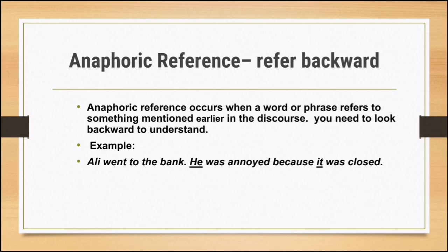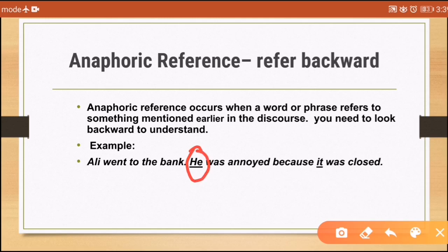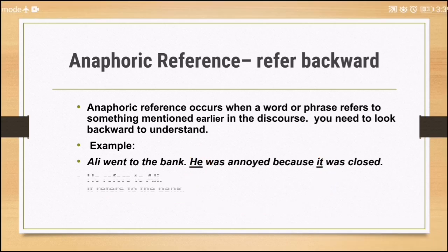For example: 'Ali went to the bank. He was upset because it was closed.' Who was upset? 'He' refers to Ali — this is anaphoric reference, referring backward. What was closed? 'It' refers to the bank — the bank was closed. This is the meaning of anaphoric reference.